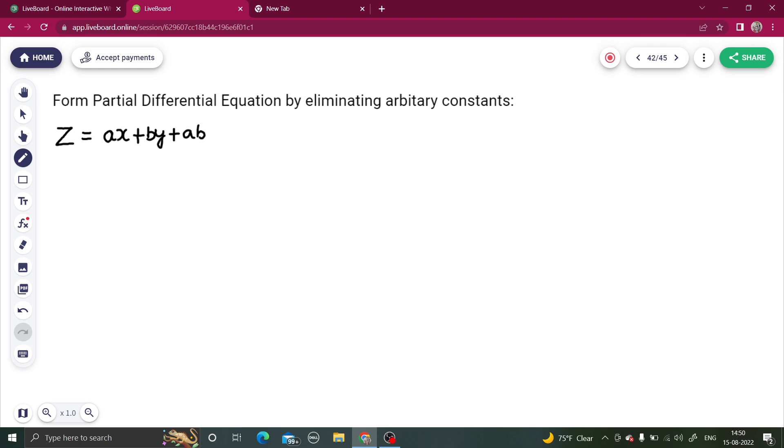It says form partial differential equation by eliminating arbitrary constant. So we have in front of us z equals ax plus by plus ab. Let's name this as our equation number one.